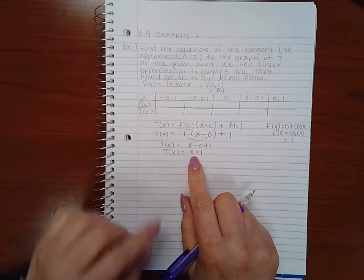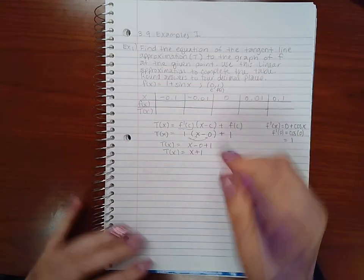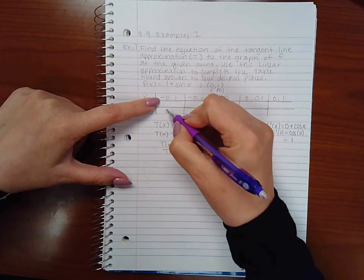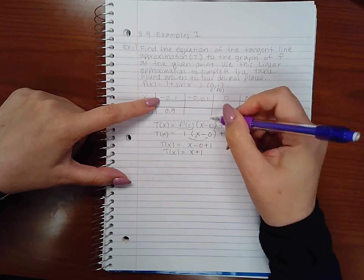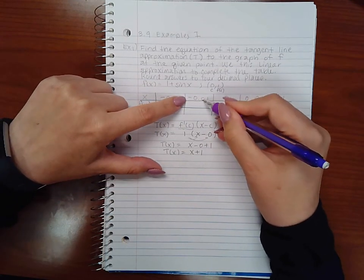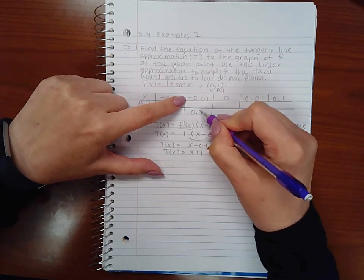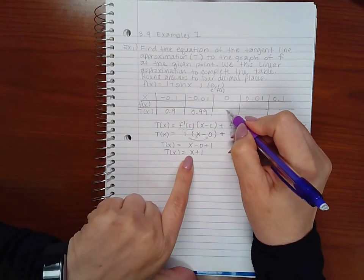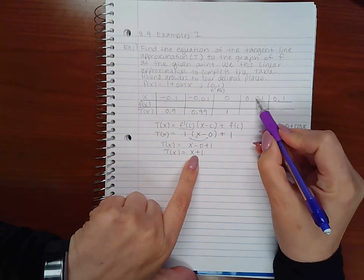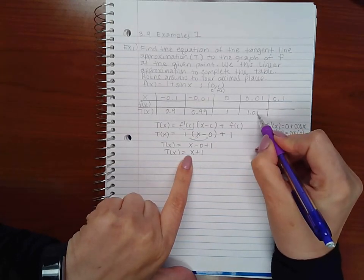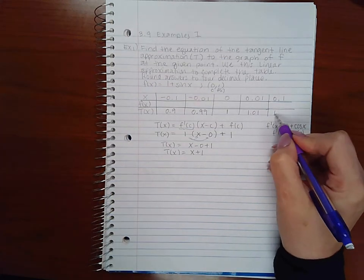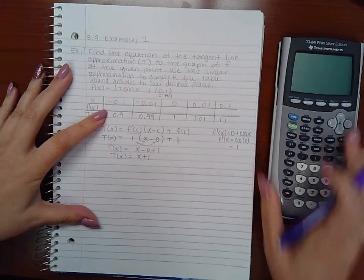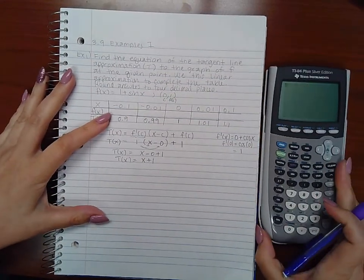Using T(x) = x + 1 to fill in the chart: if x = -0.1, T(x) = 0.9; if x = -0.01, T(x) = 0.99; if x = 0, T(x) = 1; if x = 0.01, T(x) = 1.01; and if x = 0.1, T(x) = 1.1. Now they also want me to fill in the function value, so let's program our calculator.